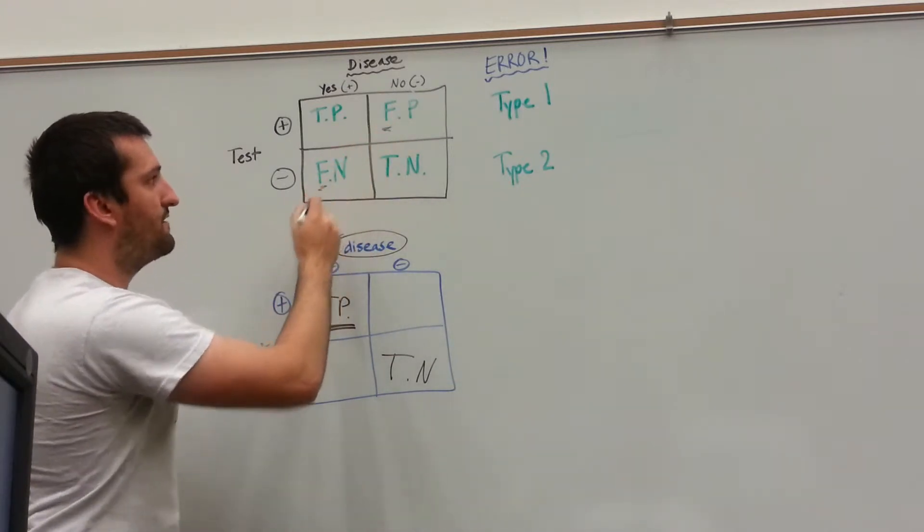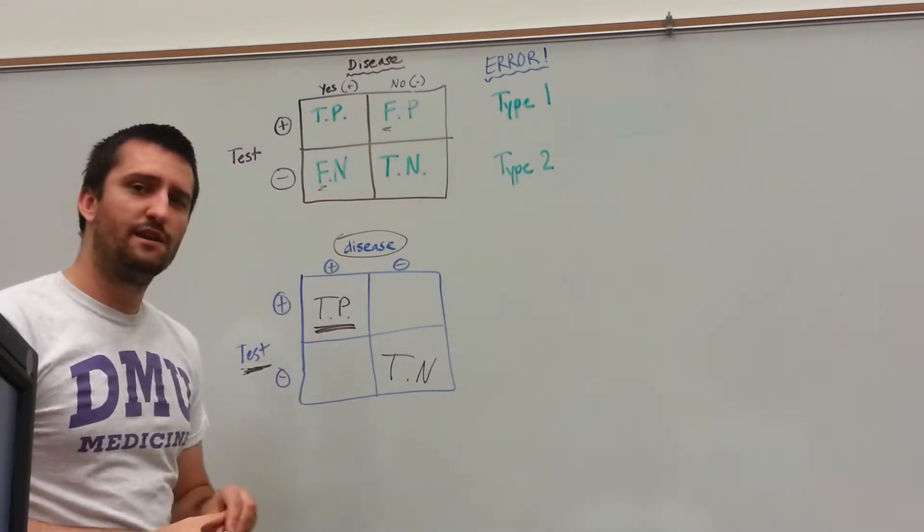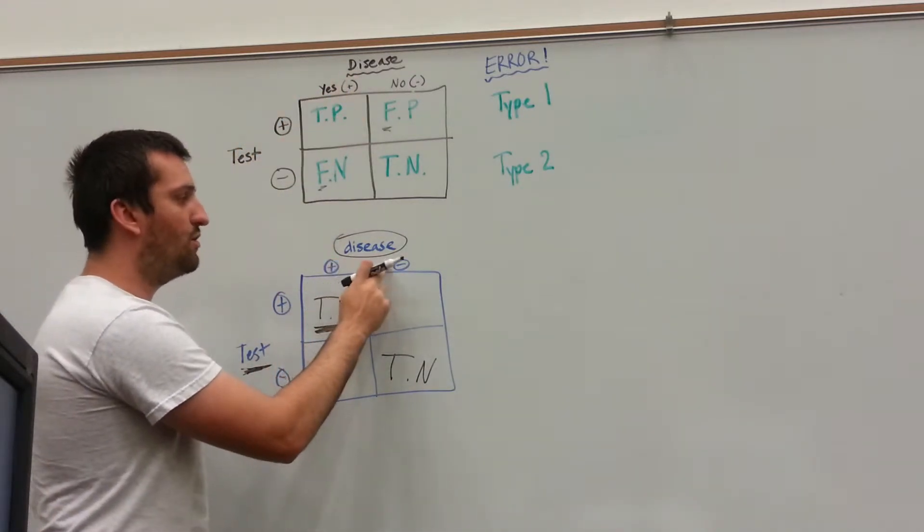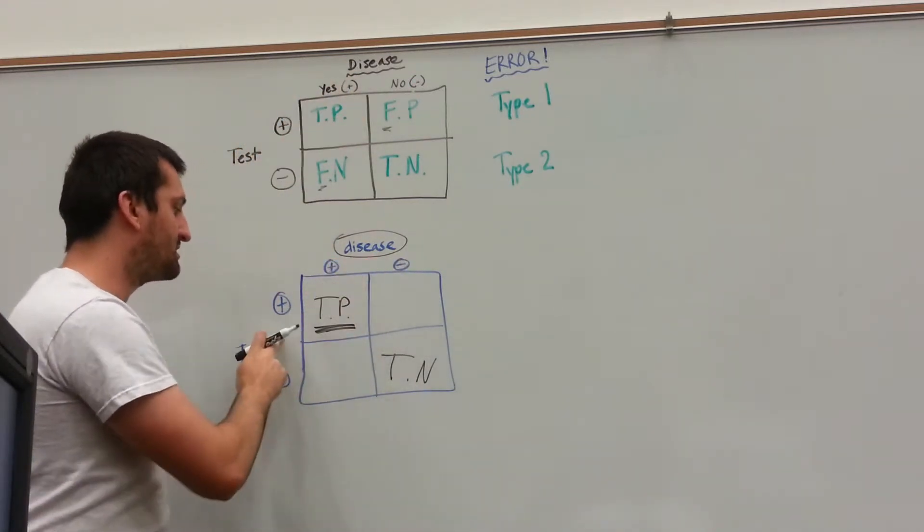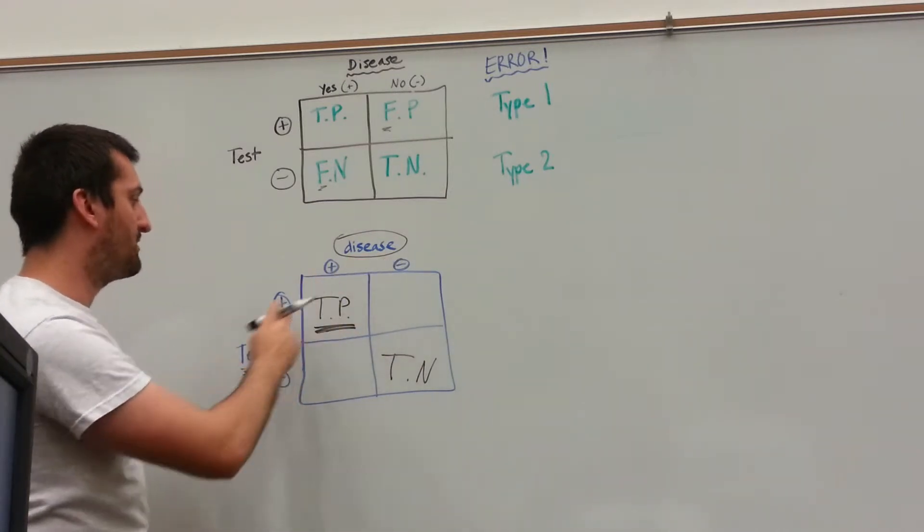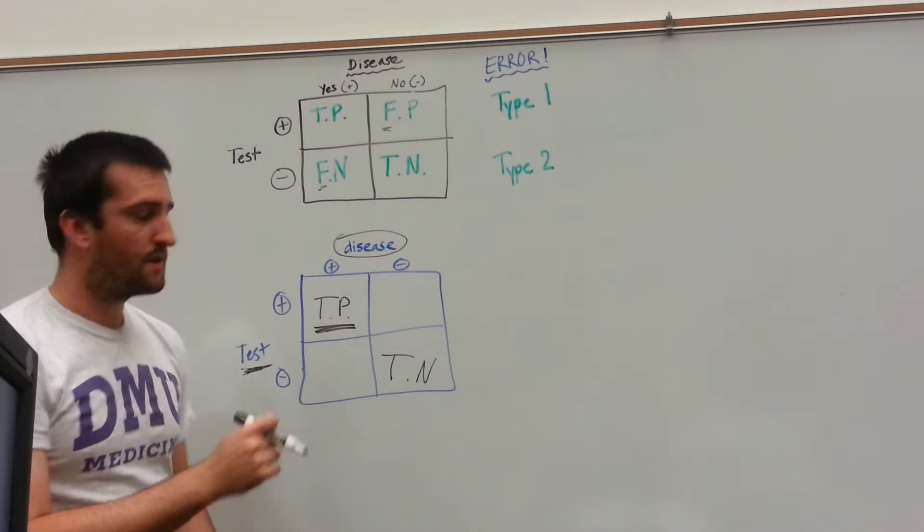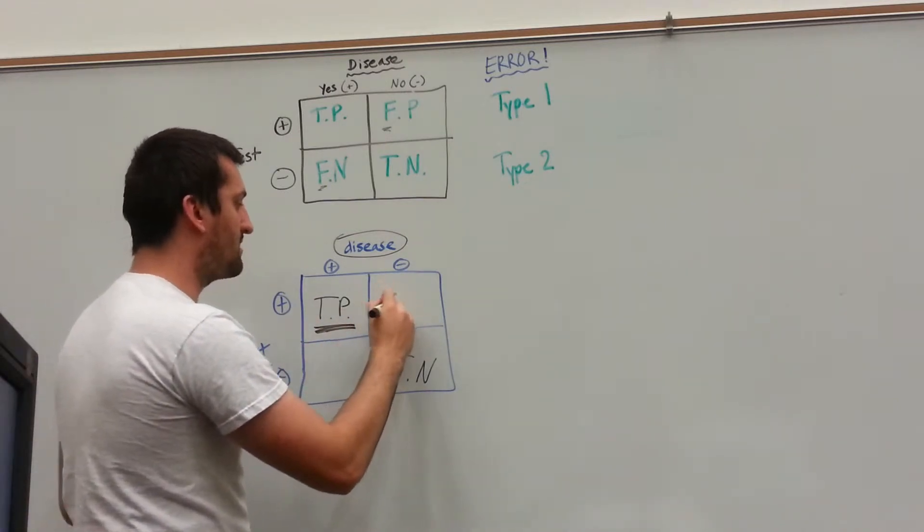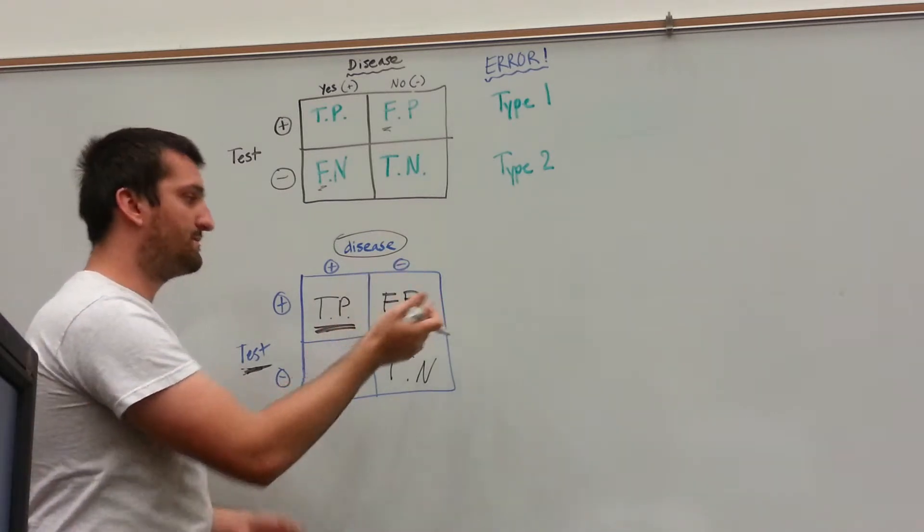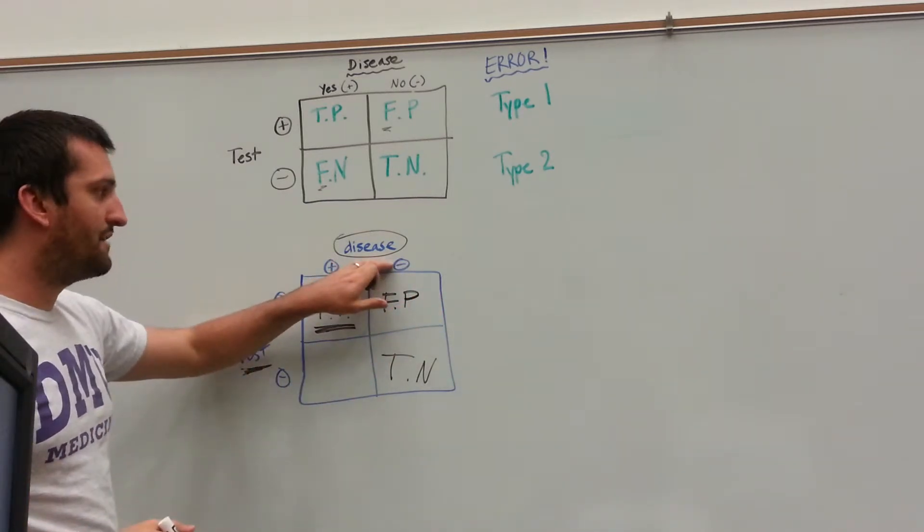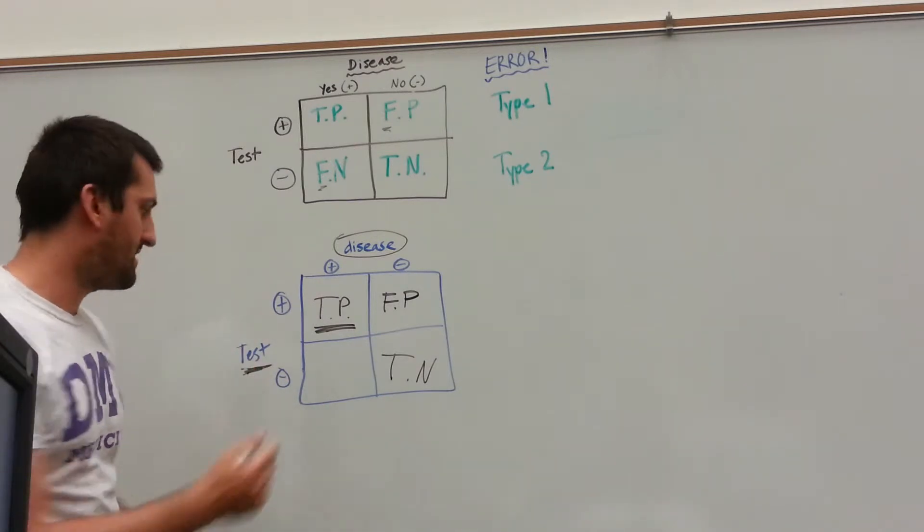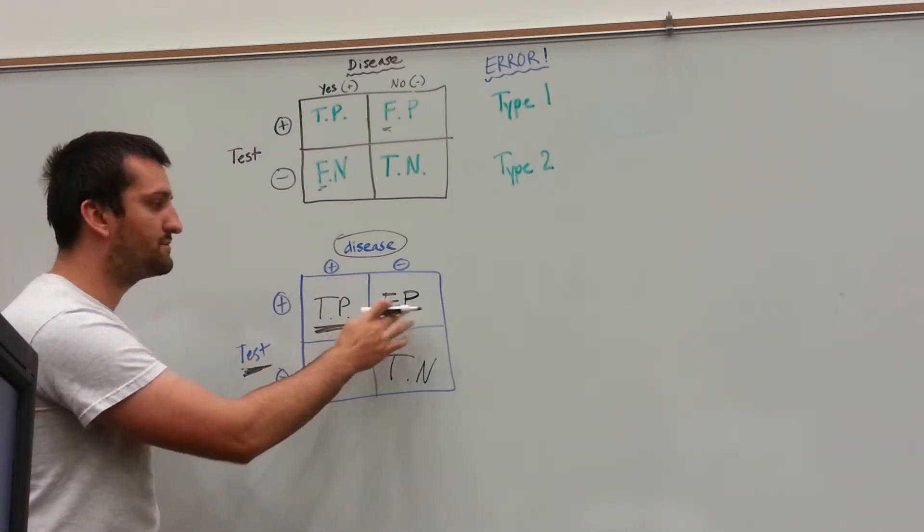Now, the false positive and the false negative, that's when these don't match up correctly. So if you don't have diabetes, but your test says you do, if you're not guilty, but the jury says you are, then that would be called a false positive. So false positive, if you don't have diabetes, but you're accidentally mistaken that the test says you do, that would be a false positive.